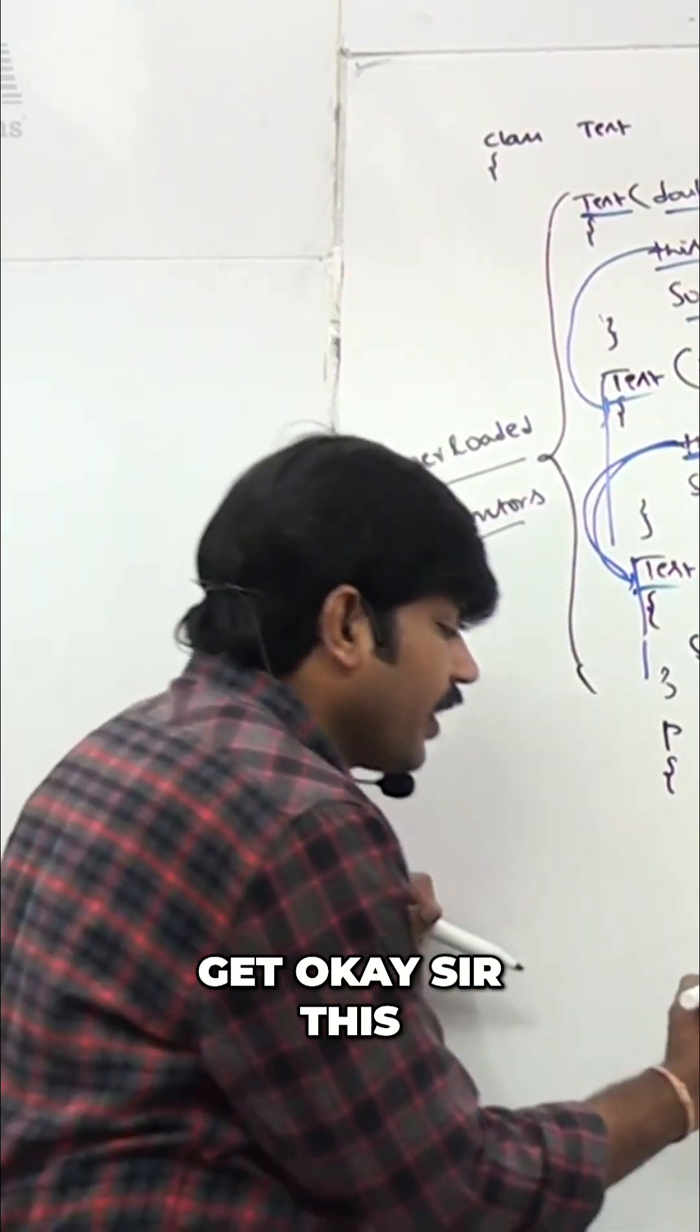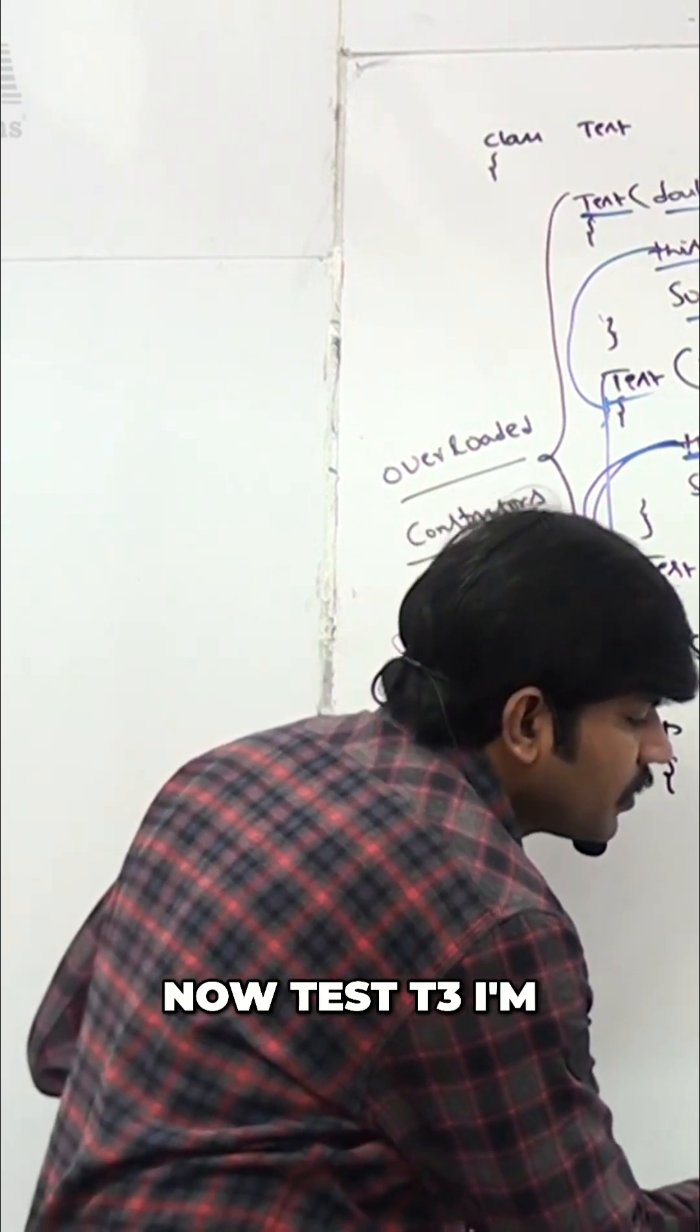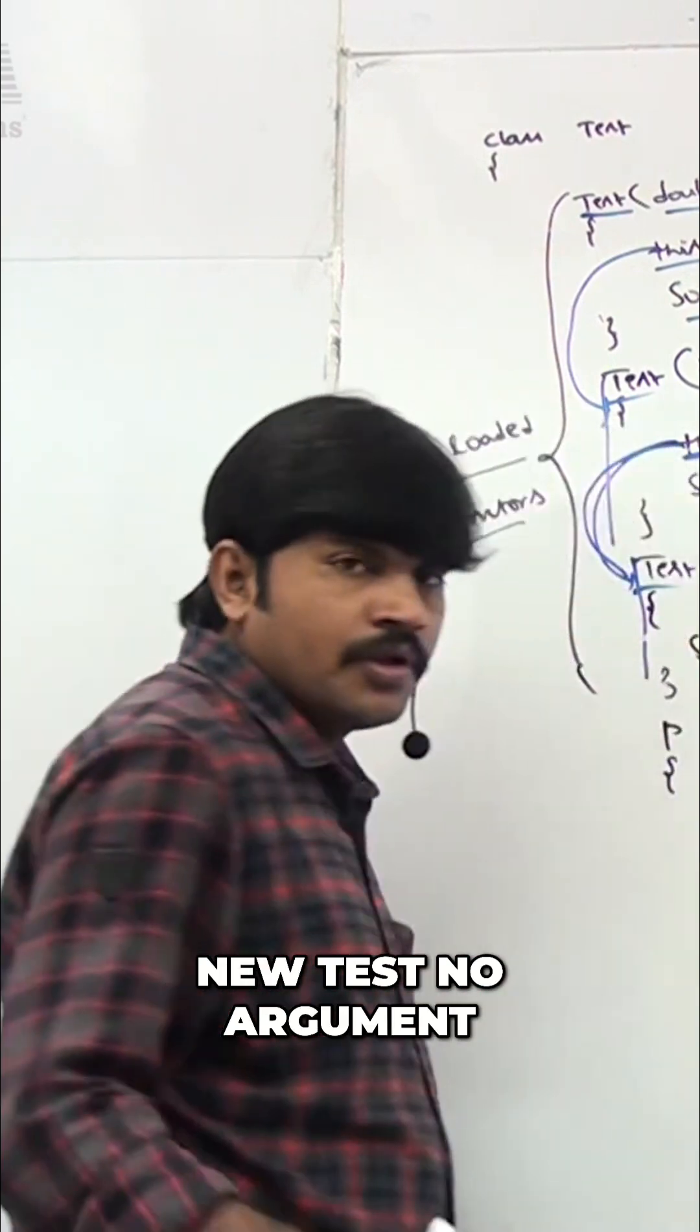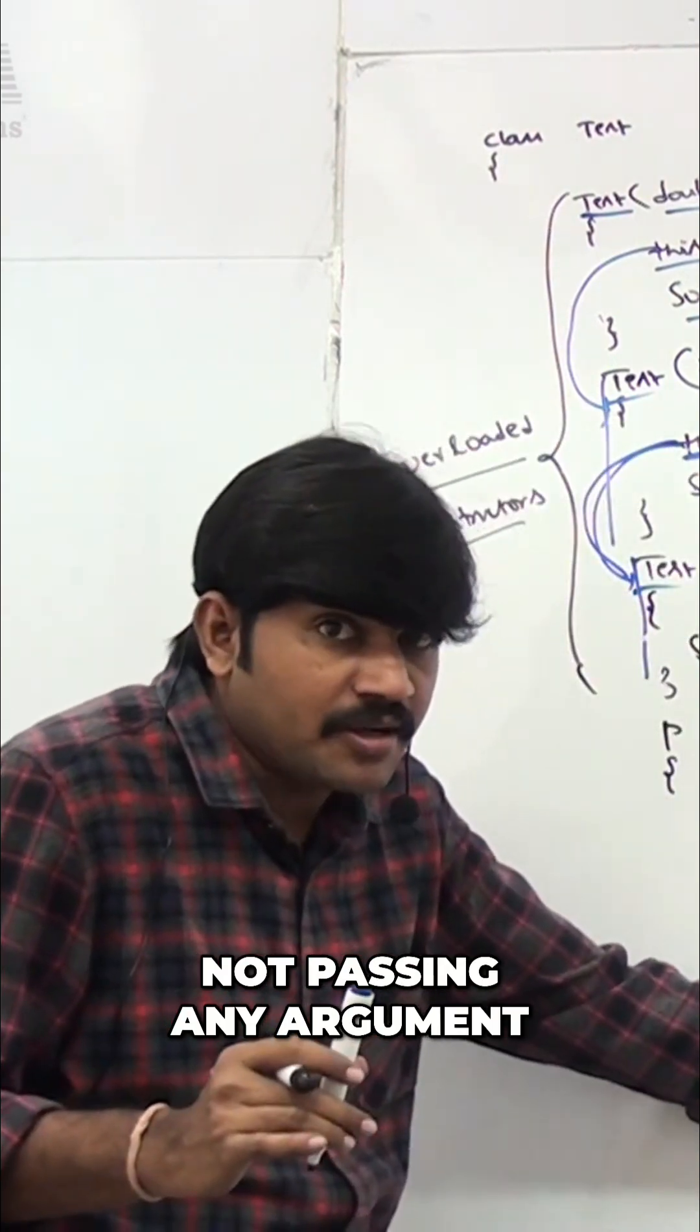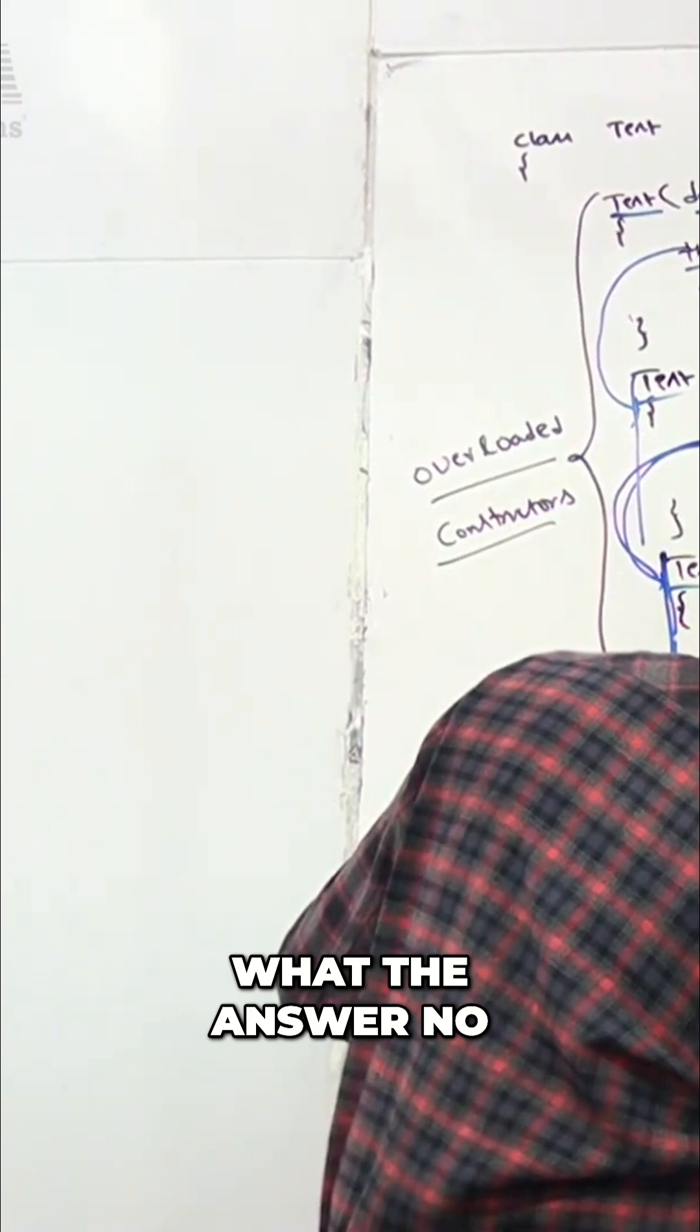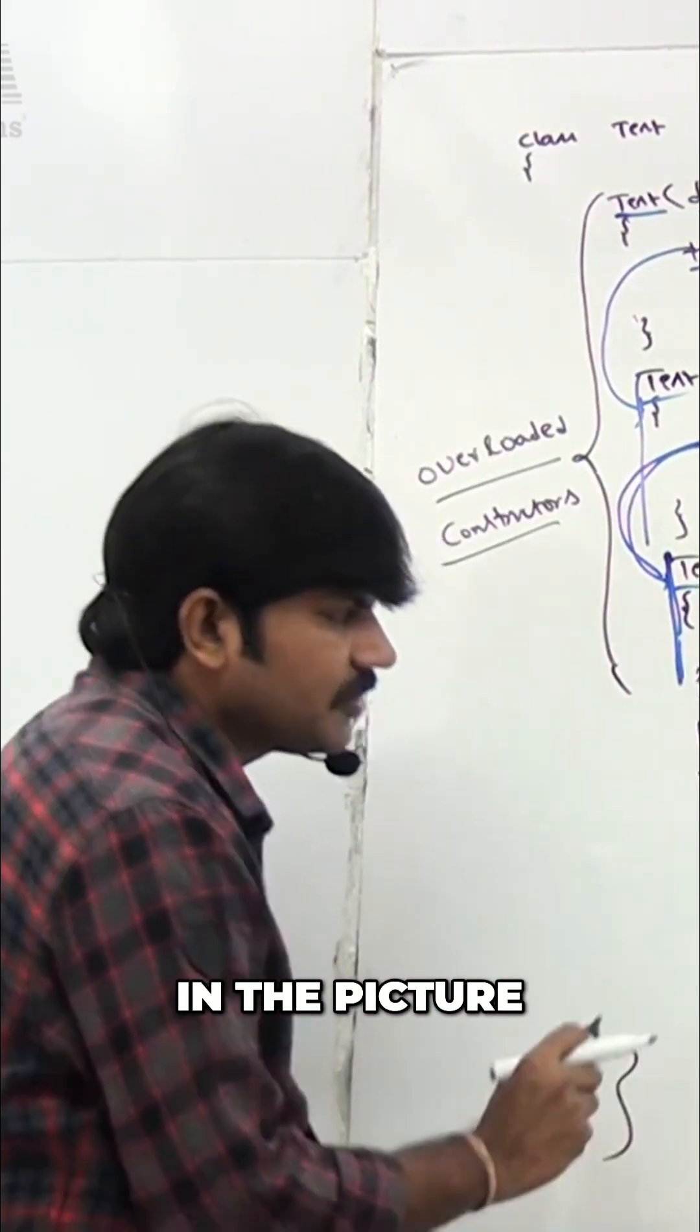This is Test t2. Now Test t3 - I'm taking new Test(), no argument. If I'm not passing any argument, the no-argument constructor will execute. That's why the answer is: no-argument constructor will come in the picture.